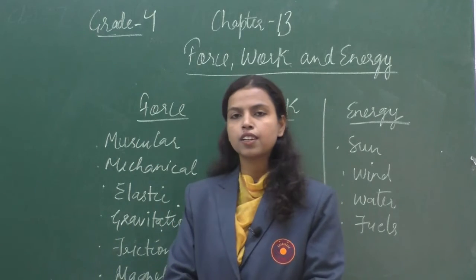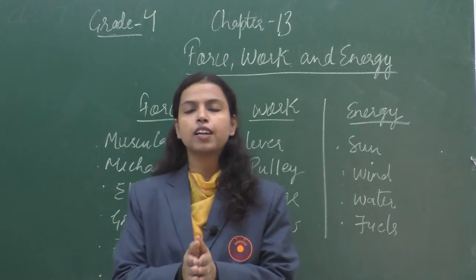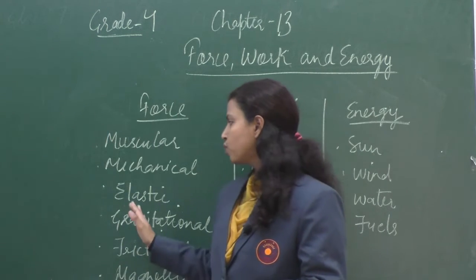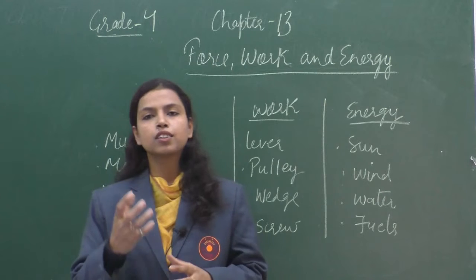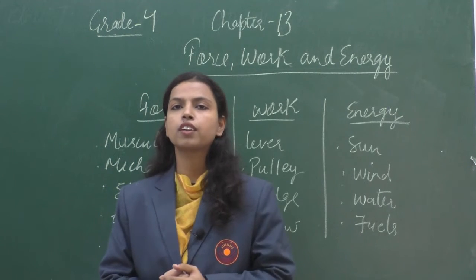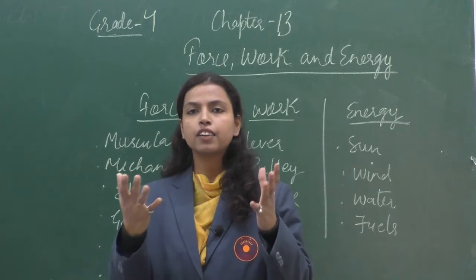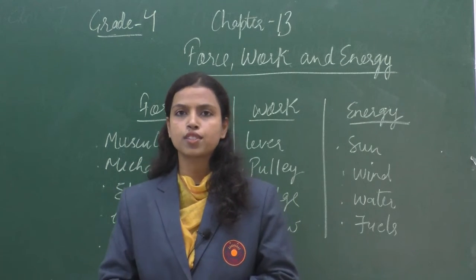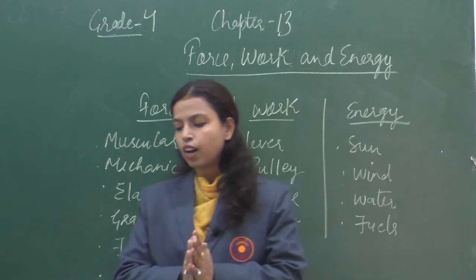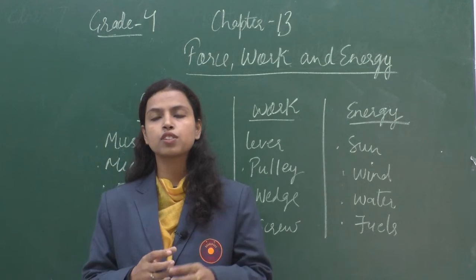We also have elastic force. When we use certain machines like a bow and arrow, we use this force. Gravitational force: the Earth pulls everything towards it, and this force is called gravitational force. Whenever we throw something into the sky, it eventually falls down.